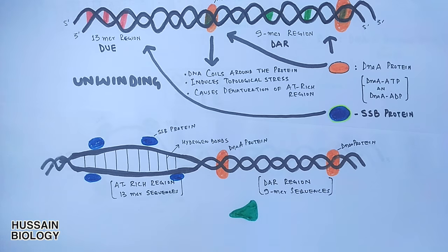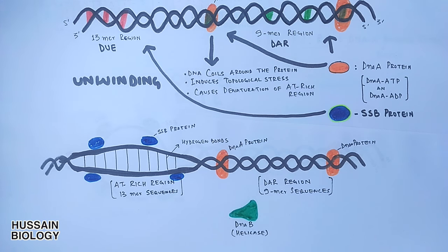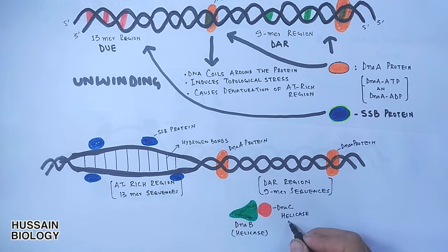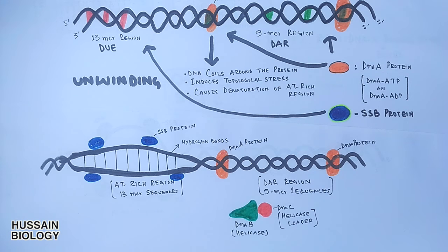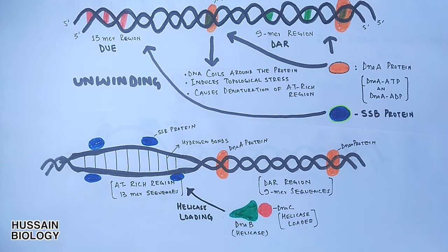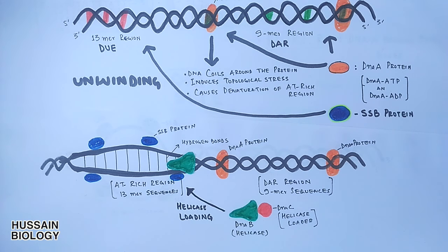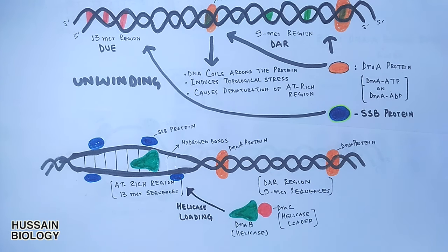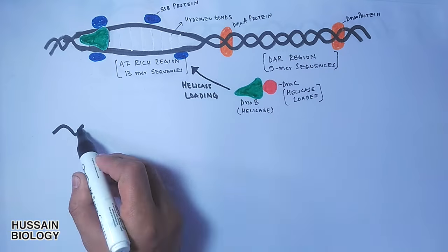For this, prokaryotes have DNA B protein, which is a helicase enzyme. It's in a complex form with DNA C protein, which is a helicase loader. Its work is to load DNA B helicase to the DUE site and itself gets detached. In the process of helicase loading, the DNA helicase moves through and breaks the hydrogen bonds between bases, and we get completely separated strands in the form of a replication bubble as shown in the diagram.